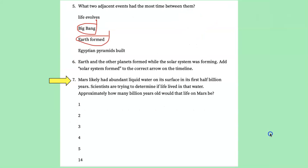We believe that Mars had abundant water on its surface in its first half a billion years of history. And so scientists are trying to determine if life lived in that water. If that were the case, how many billion years old would that life be? Well, Mars formed with the rest of the solar system about 4.5 billion years ago. So if that first half a billion is the time that had life, it would be 4 billion years old.